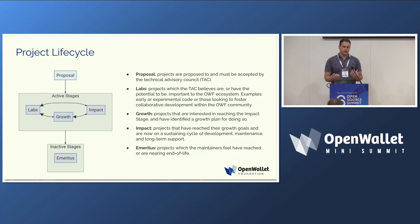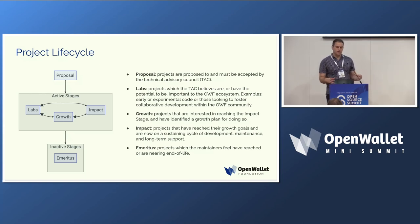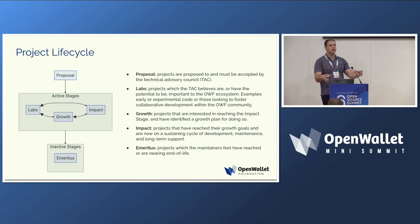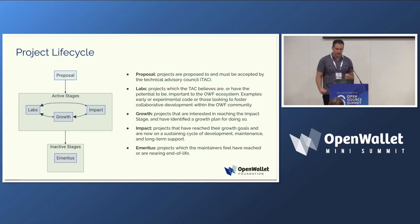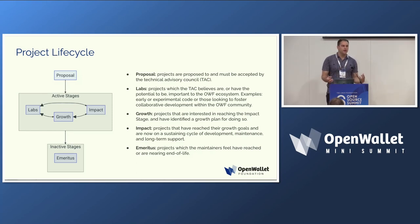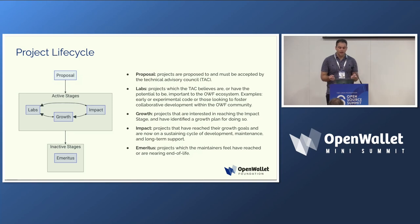We have three main stages of projects in the OpenWallet Foundation. There are labs, which are for early or experimental code or people looking to start collaborative development — people who want to show their code and say, hey, come join me. Then we have the growth stage, for projects looking to get more diverse contributors, add more maintainers, and really expand their footprint. And finally, we have a mature project lifecycle status called impact, for projects that are popular, have a big development community, diverse maintainers, and long-term support.